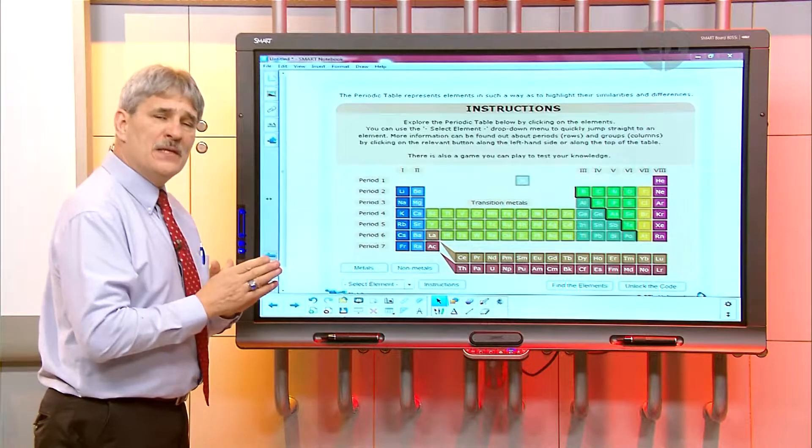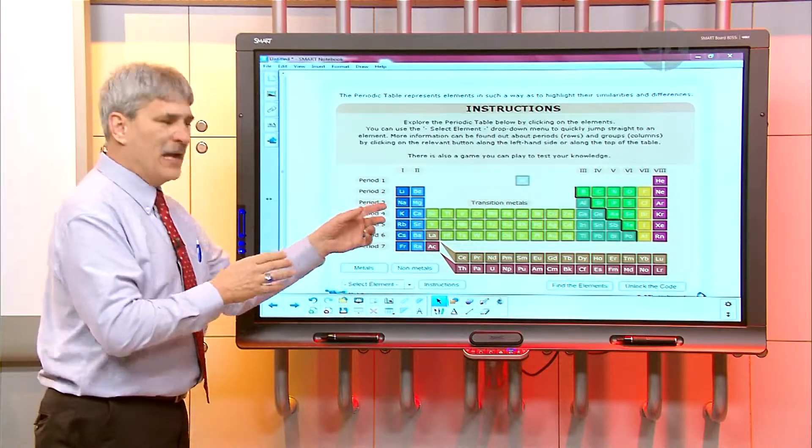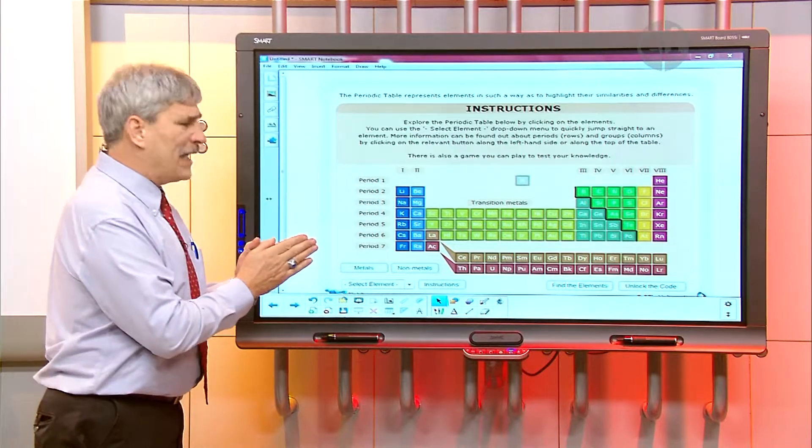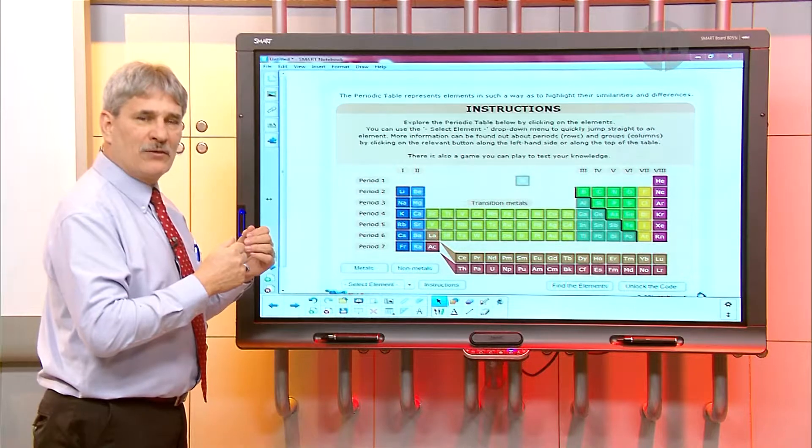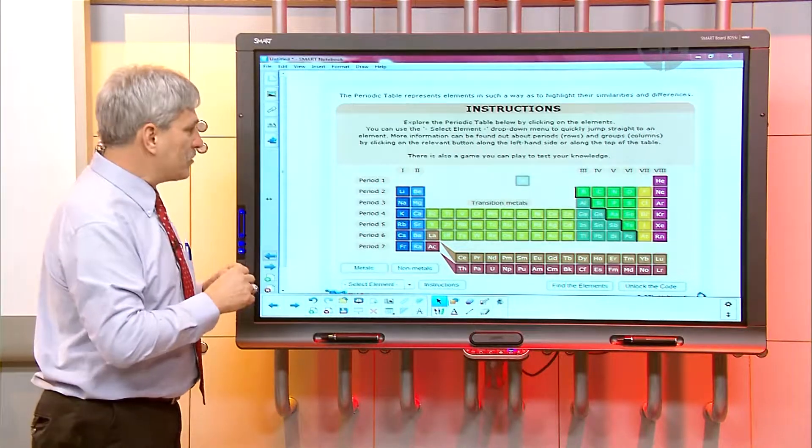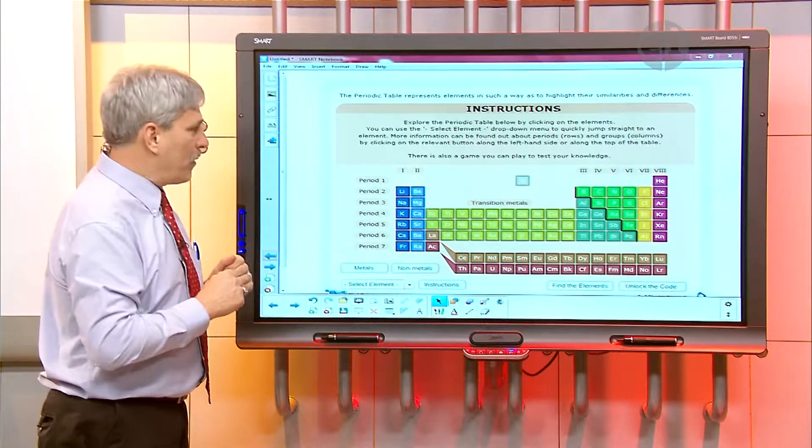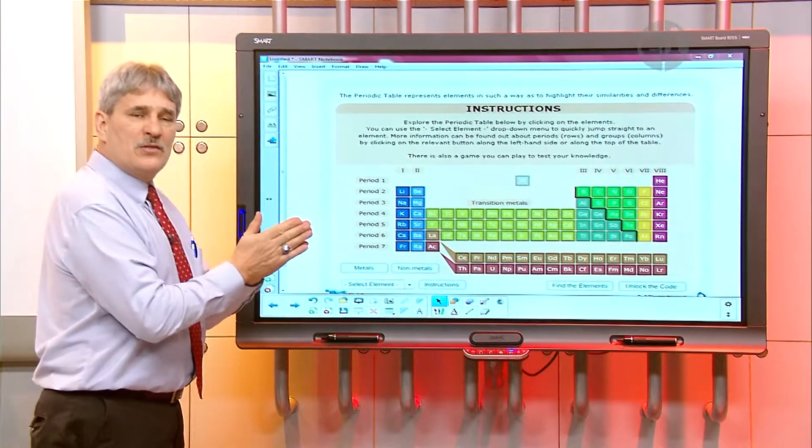The atomic number is the number of protons in an element. Now we know that all atoms contain three major particles that we talk about: protons, neutrons, and electrons. When you get into more chemistry and physics, you'll find out that there's even smaller particles yet, but those are the three subatomic particles that we would deal with at the high school level.